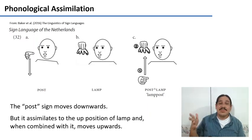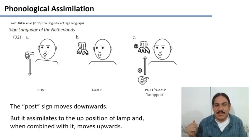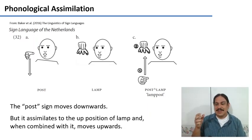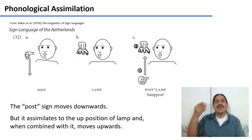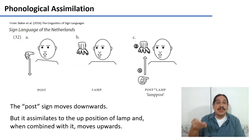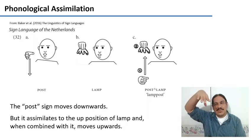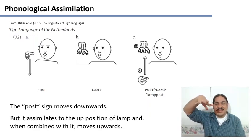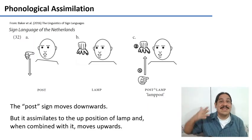So this is very similar to gotcha, for example, where your tongue was pulled backwards because of the palatal sound, so that it would be closer to where the palatal sound was supposed to begin. Here, the post sign is pulled upwards so that you'd be in the position where the lamp sign needs to begin. This is phonological assimilation.